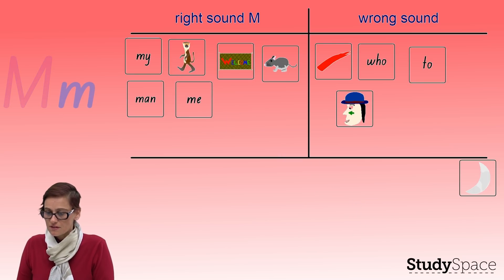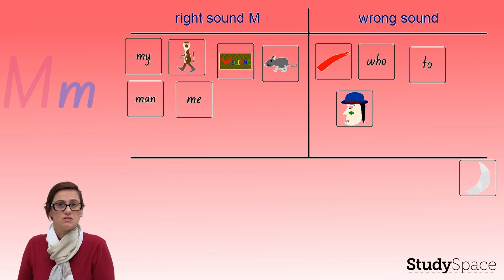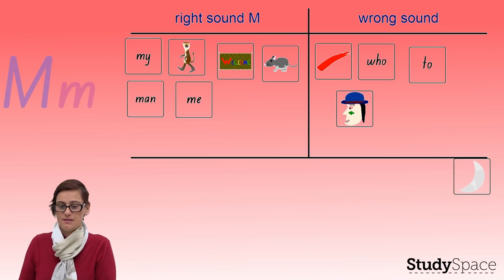And what about the moon? Moon. I don't see the man in the moon, but we've got the moon. Is he a right one or a wrong sound, boys and girls? Mmm. Moon. He's a right one, isn't he, boys and girls?